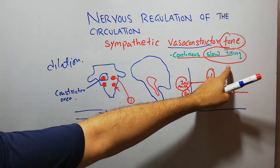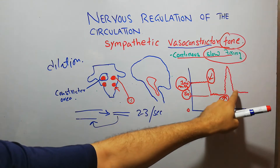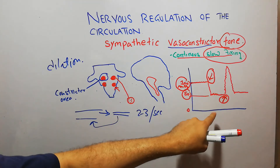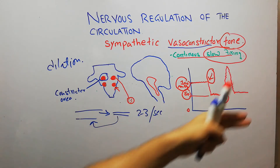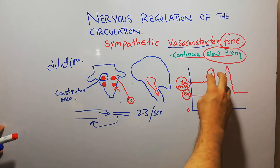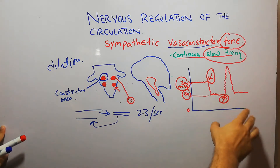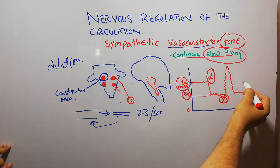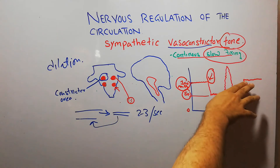But as the effect of the norepinephrine wears off, the mean arterial pressure falls again to 50 mmHg. As long as the anesthetic remains active, the mean arterial pressure will stay at 50 mmHg. When the effect of the anesthetic is completely gone, the tone in the vessels will automatically return to normal, restoring the mean arterial pressure and constriction in the blood vessel.